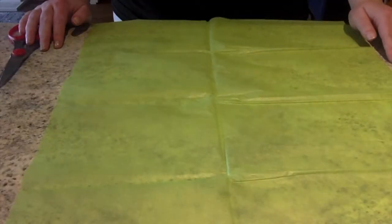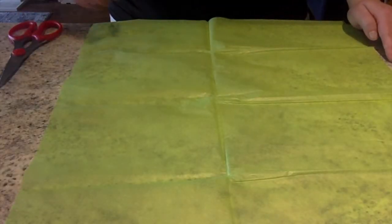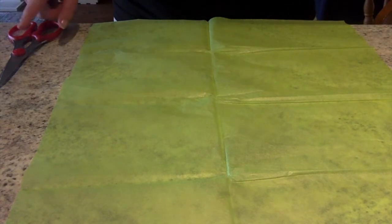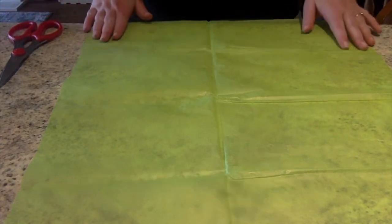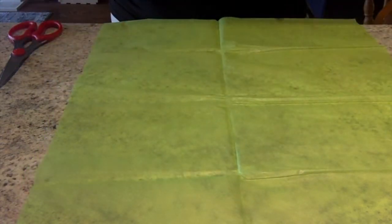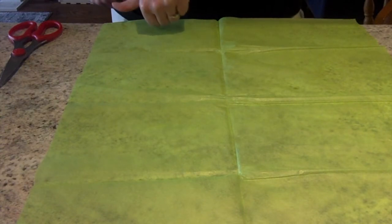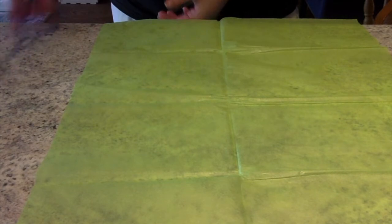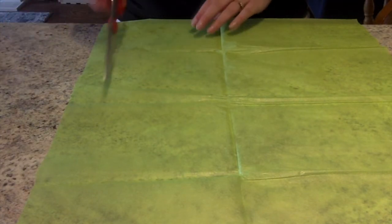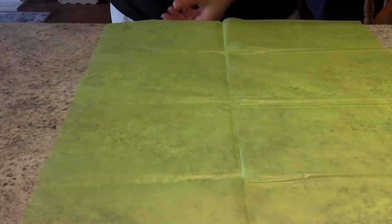While our paper plate is drying we are going to cut our rainbow strips out of our tissue paper. So you're going to grab your scissors and lay your tissue paper out flat. You're going to want to cut about two inches or the size of your thumb thick. And you're going to want to cut a big long strip all the way to the end of your tissue paper.